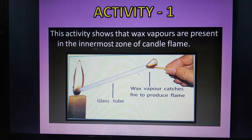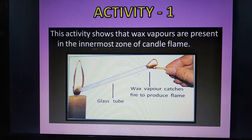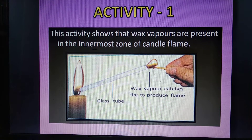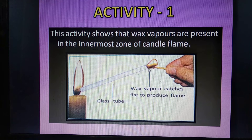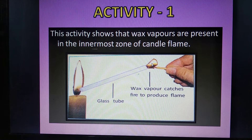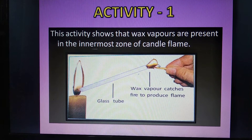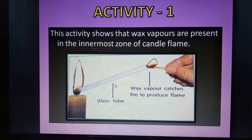This can be explained as follows. The innermost zone or the dark zone of the candle flame near the heated wick consists of unburnt wax vapors. Some of these wax vapors enter the glass tube and come out from its other end. When we bring a lighted matchstick near this end of the glass tube, the wax vapors coming out of it start burning, producing a flame. This activity shows that the innermost zone, i.e. the dark zone or black zone of a candle flame, consists of unburnt wax vapors.